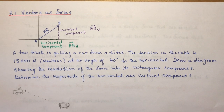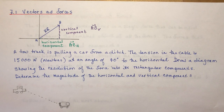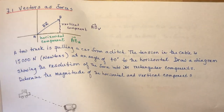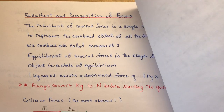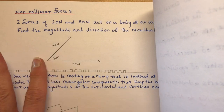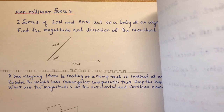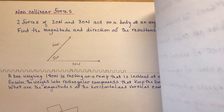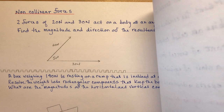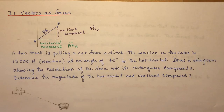7.1: Vectors as Forces. Today we're going to talk about vertical and horizontal forces — pulling a tow truck from a ditch. We'll discuss resultant and compositional forces, non-collinear forces with two forces acting on a body, and the classic box resting on a ramp question.